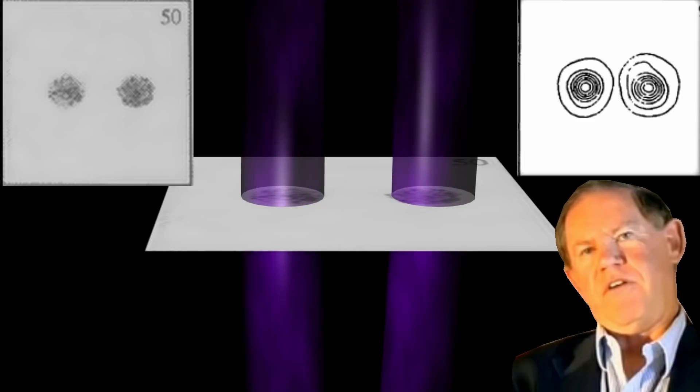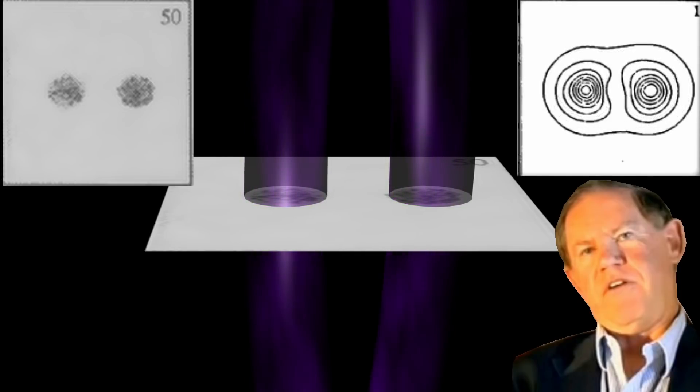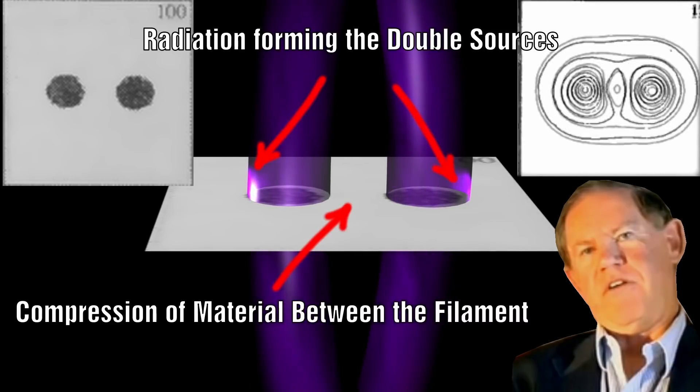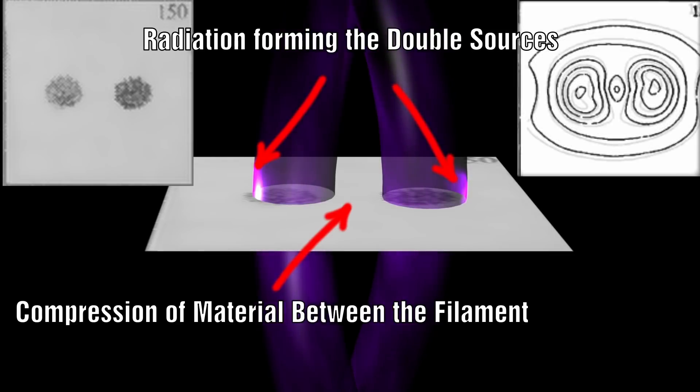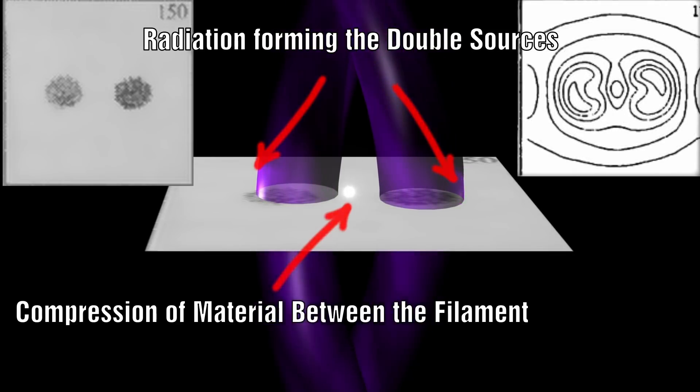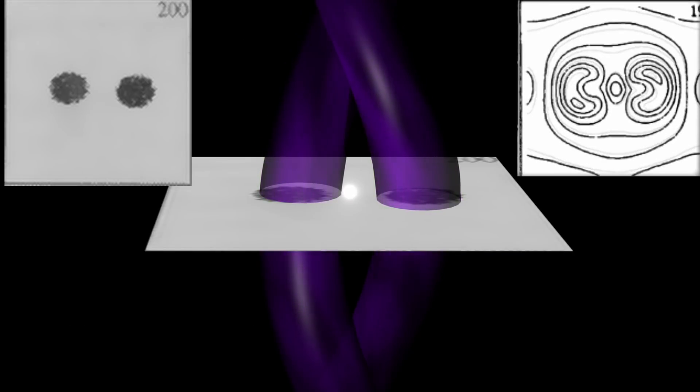Anthony Peratt had a slightly different concept of how galaxies might form in a plasma universe. Here two filaments essentially twist together and at the closest point a double layer forms which causes the material to be collected there.